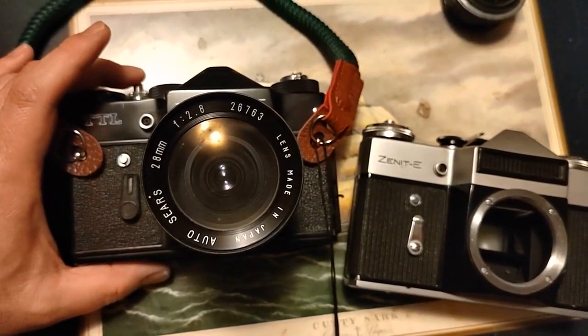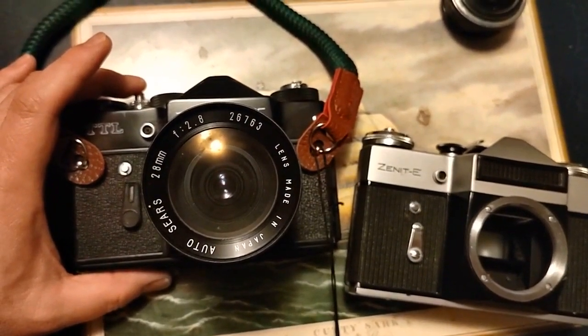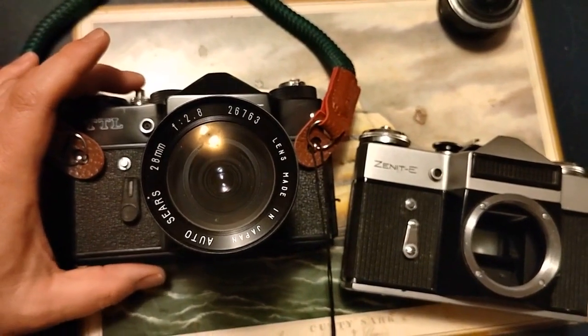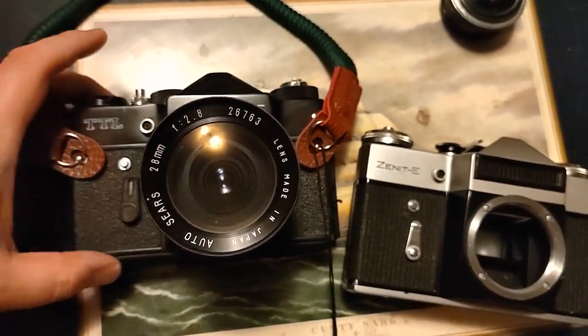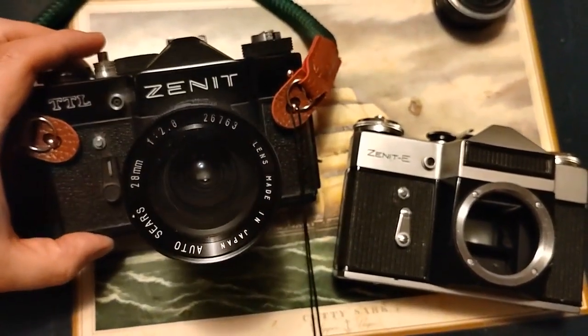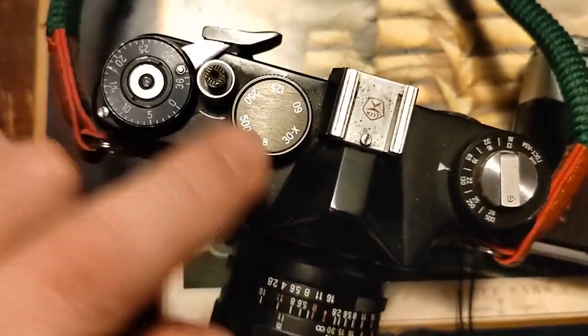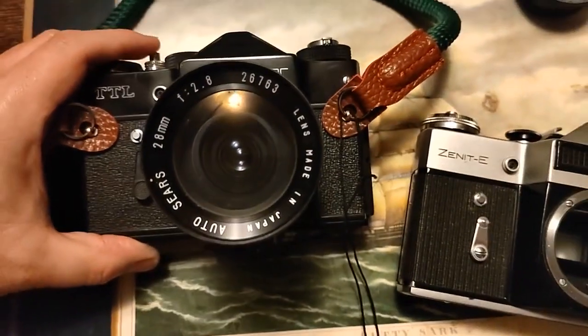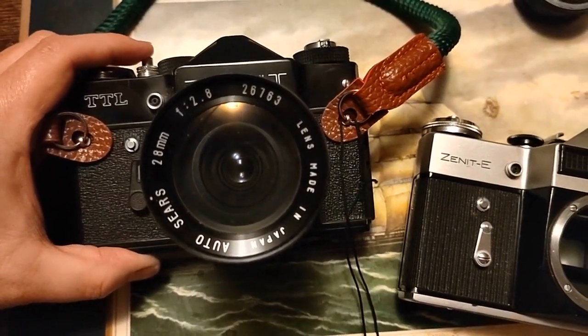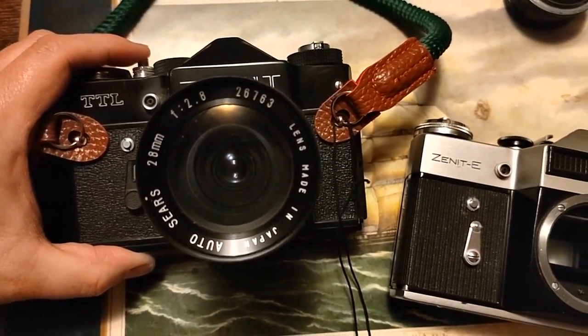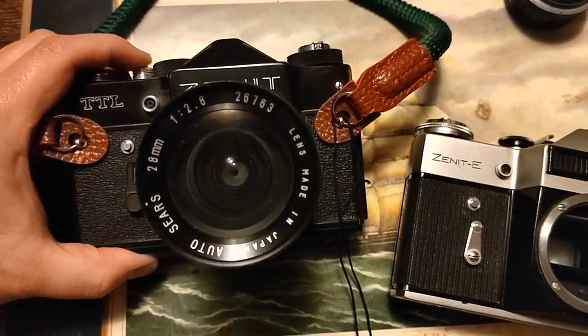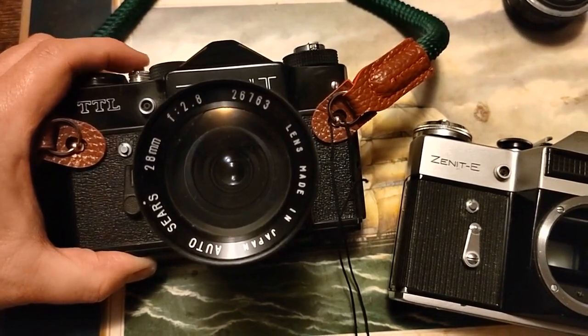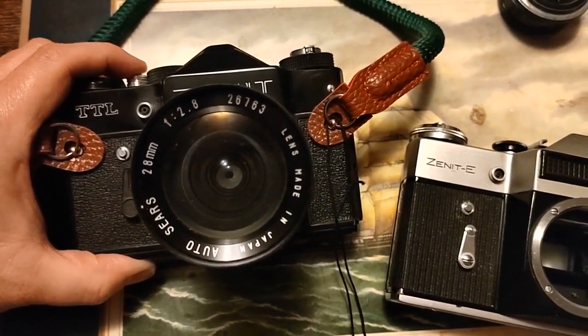The problem is, if you're looking through the viewfinder, you want as much light to get in as possible, so you get a nice, bright image to look at. But then when you take the photo, you need to have the correct light exposure based on your film speed and your shutter settings. So these automatic cameras actually do something kind of cool. When you go to take the photo, they blink. That doesn't change what you see on the picture. It just makes it dimmer.